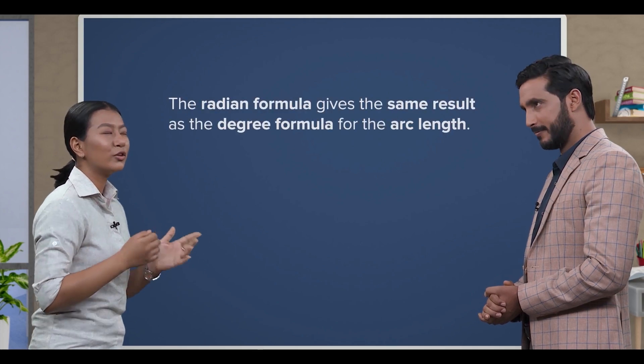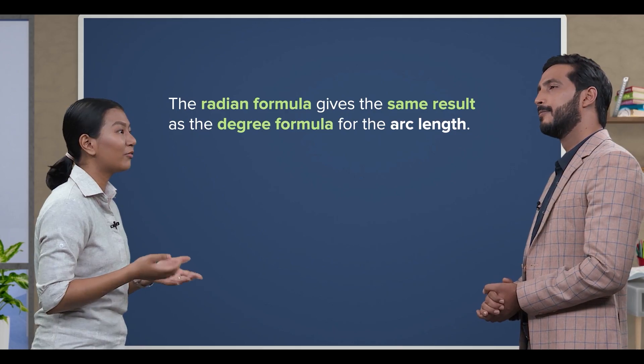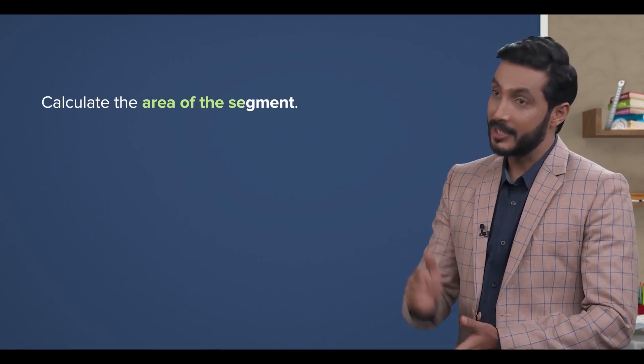As expected, the radian formula gives the same result as the degree formula for the arc length. Exactly. After all, it's the same circle with the same arc. Now, let's look at the question calculating the area of the segment again.